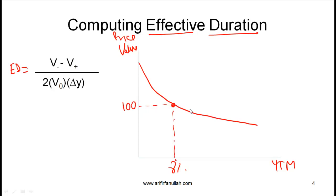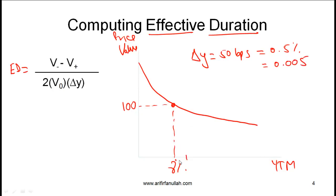To calculate effective duration, let's say we increase interest rates by 50 basis points, so delta Y equals 50 basis points, which equals 0.5%, which equals 0.005. If interest rates go up by 50 basis points, the yield is 8.5% and at that yield the bond price comes down to 99. If the interest rate is decreased by 0.5%, we are at 7.5%, and at that yield the price of the bond becomes 102.